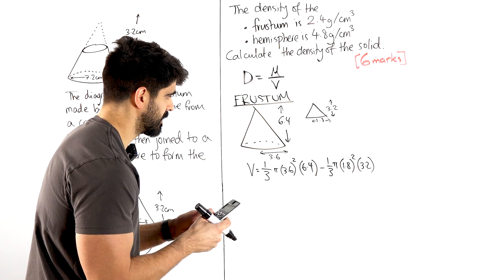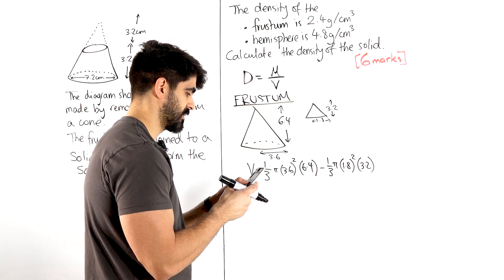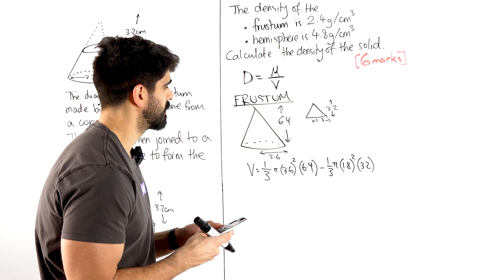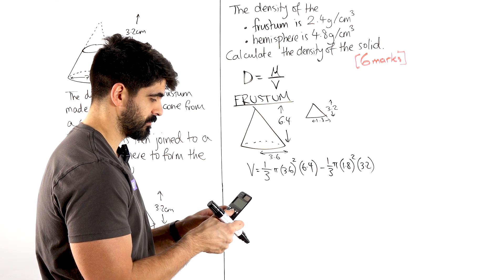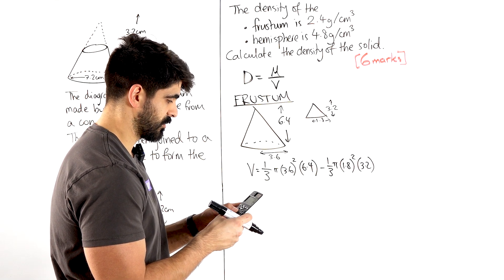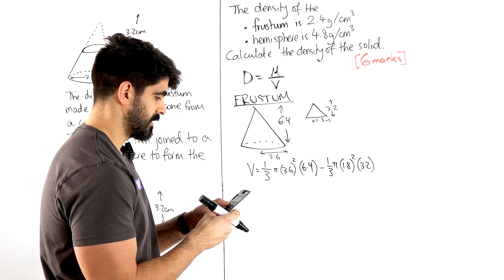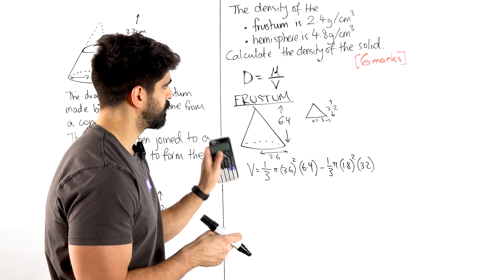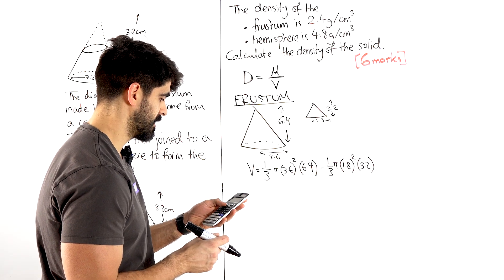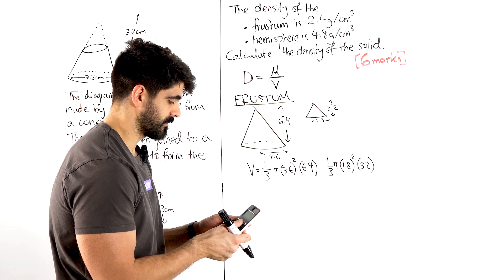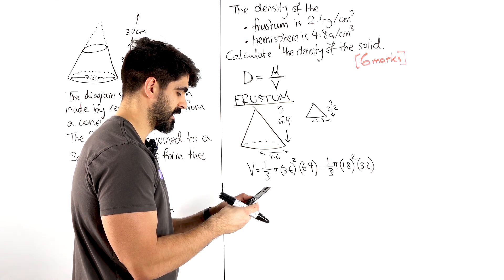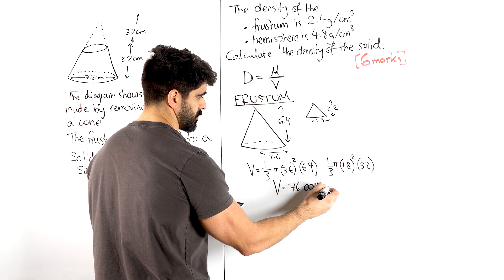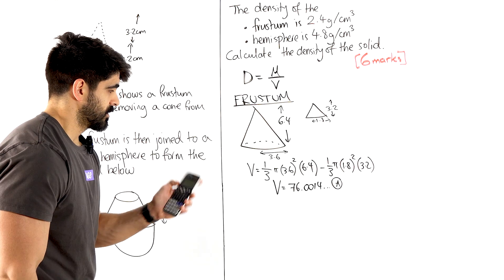I do not get a very nice answer, which, oh it's because I didn't close that bracket. I still don't get a nice answer. Maybe I need to type these in separately then. So one third pi times 3.6 squared times 6.4. I just don't seem to be getting nice answers at all which is pretty annoying. So that's 76 point whatever. I'm actually just going to store its value then. So I'm going to store it as A. So my volume is 76.0014 dot dot dot which I'm storing as A.